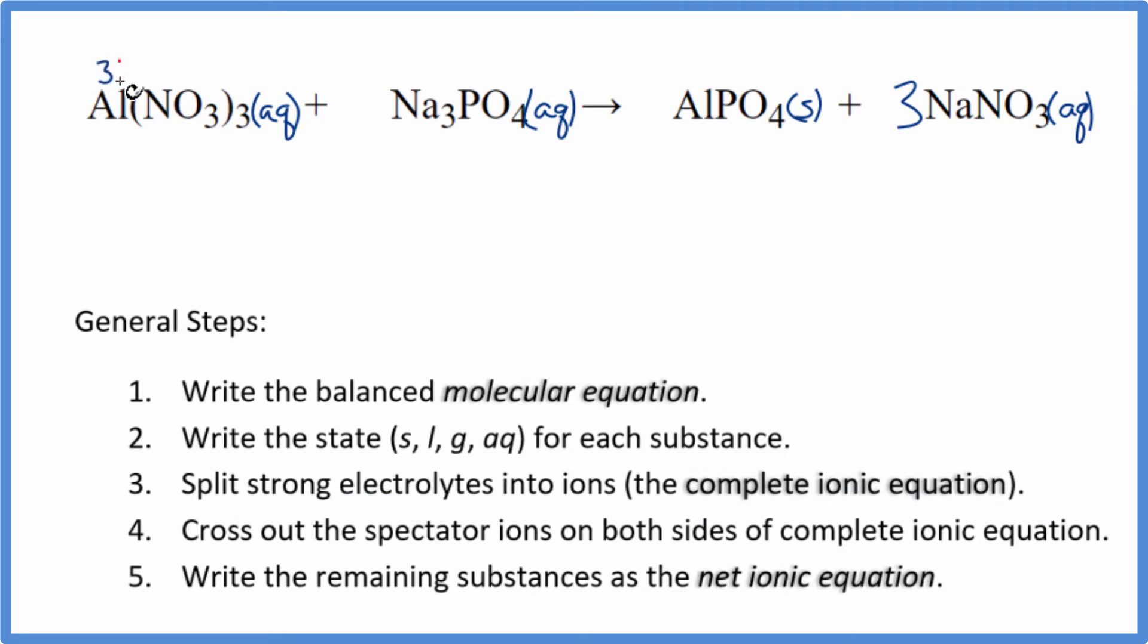Aluminum is always three plus, and the whole nitrate ion is always one minus, good one to remember. So we have the aluminum ion, Al three plus, and then we have three of these nitrate ions, three of the nitrate ions. Sodium is in group one, it's a one plus ionic charge, and the whole phosphate always three minus. So we have three sodium atoms, and then we have the phosphate ion.